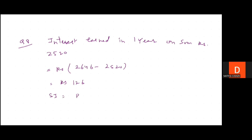Now simple interest equals P times R times T by 100. Simple interest we have been given is 126, which we just calculated. So 126 equals 2520 times 1 times R by 100. Cancel it - 126 equals 126 times R times 1 by 5.